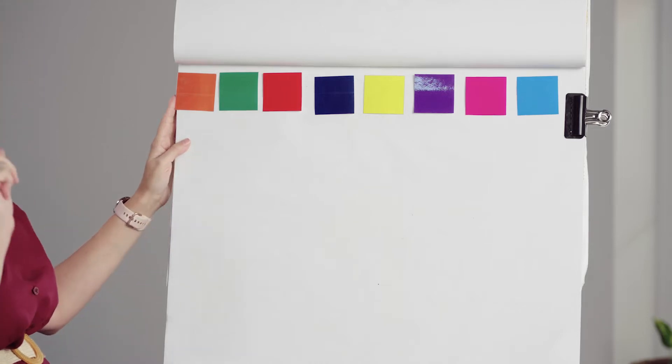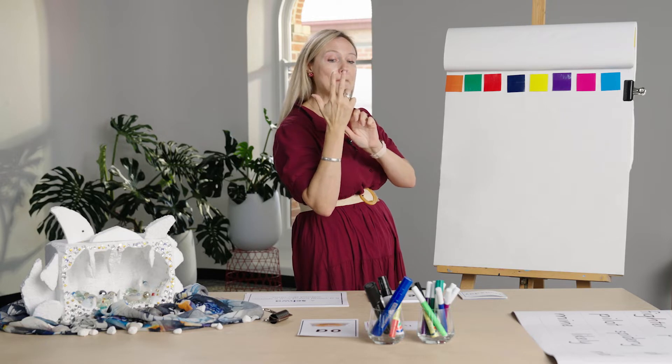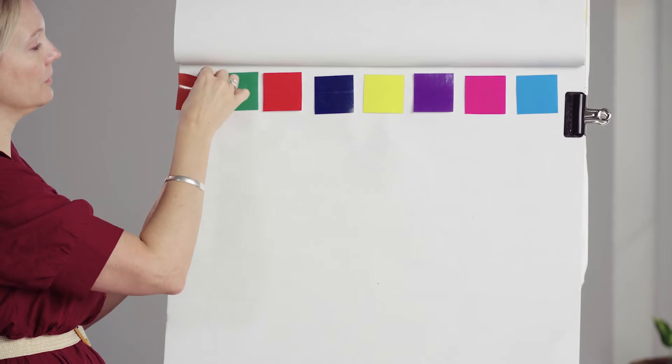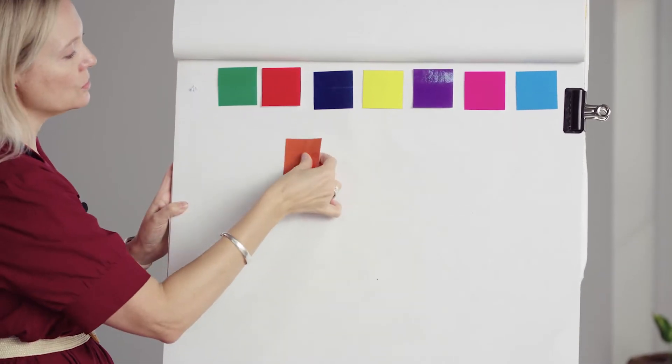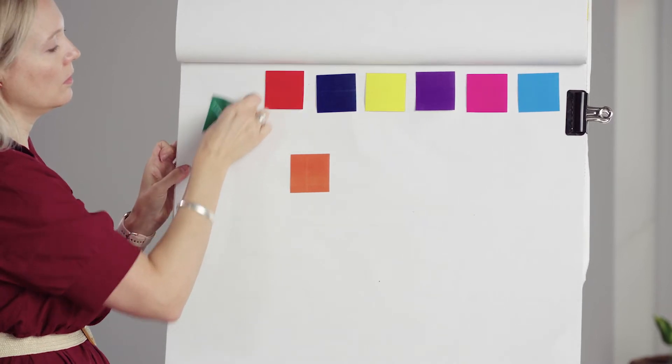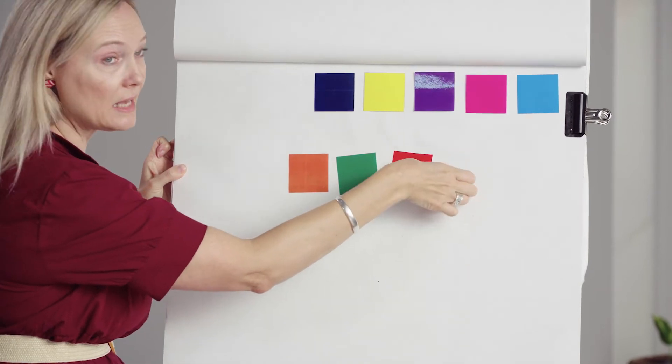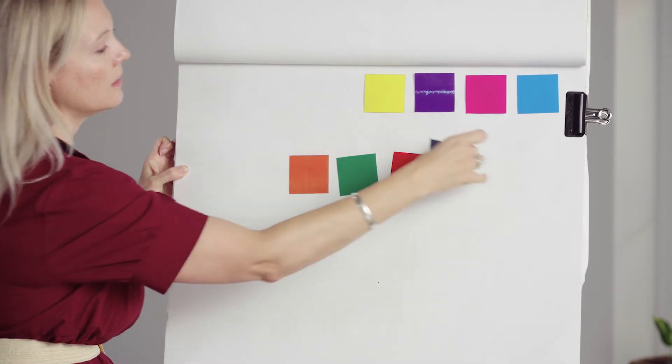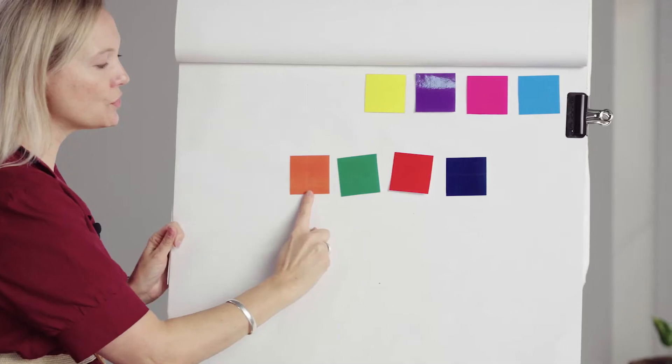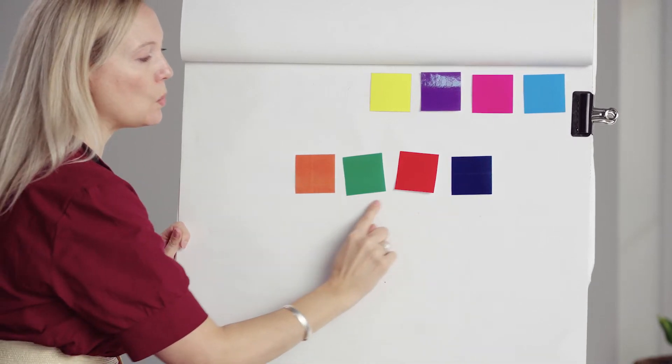I'm going to build the word swim. S, w, i, m. Four phonemes, four counters. S, w, i, m. Let's tap those phonemes. S, w, i, m. Swim. Good job.